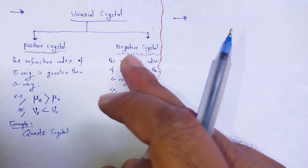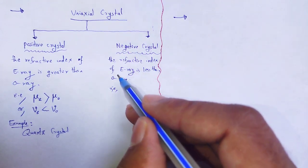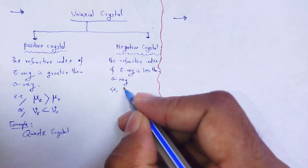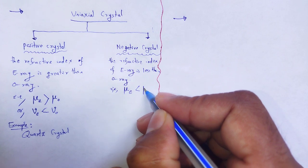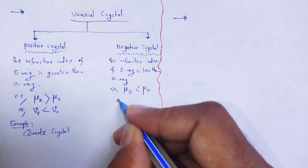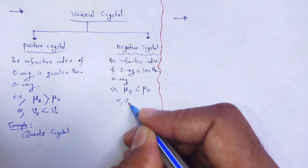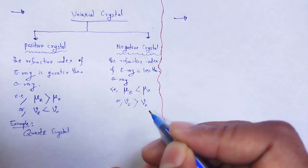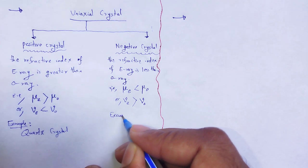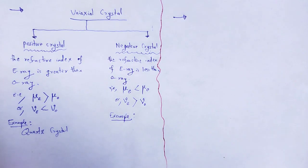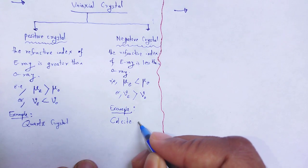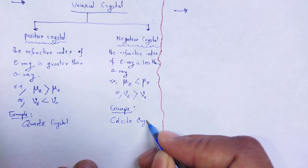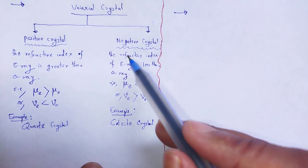In the same manner, in the case of a negative crystal, the refractive index of the E ray is less than that of the O ray, meaning the velocity of the E ray is greater than the velocity of the O ray. An example of a negative crystal is calcite crystal.